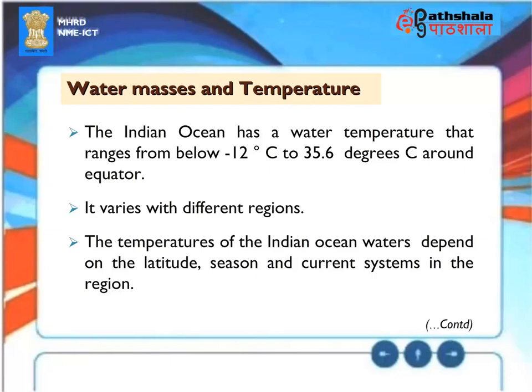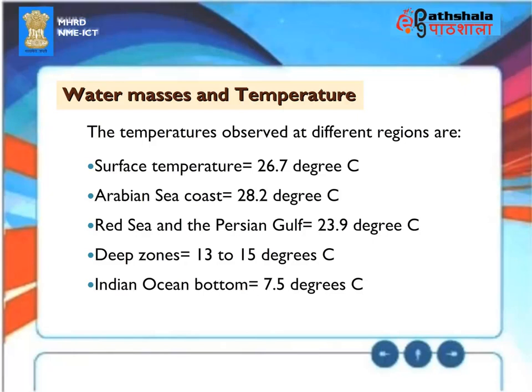Water masses and temperature. The Indian Ocean has a water temperature that ranges from below minus 12 degrees centigrade to 35.6 degrees centigrade around the equator. It varies with different regions. The temperatures of the Indian Ocean waters depend on the latitude, season, and current systems in the region. The temperatures observed at different regions are: surface temperature 26.7 degrees centigrade, Arabian Sea coast 28.2 degrees centigrade, Red Sea and the Persian Gulf 23.9 degrees centigrade, deep zones 13 to 15 degrees centigrade, and Indian Ocean bottom 7.5 degrees centigrade.